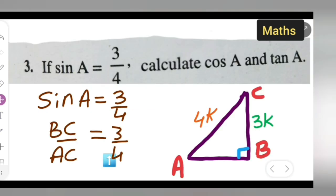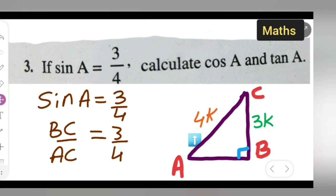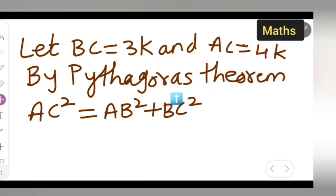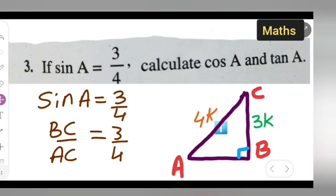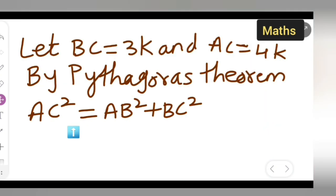I have taken triangle ABC, where angle B is 90 degrees. BC is 3k because opposite of A is BC. And AC is the hypotenuse, which is 4k. In Pythagoras theorem, the hypotenuse comes first: AC squared equals AB squared plus BC squared.